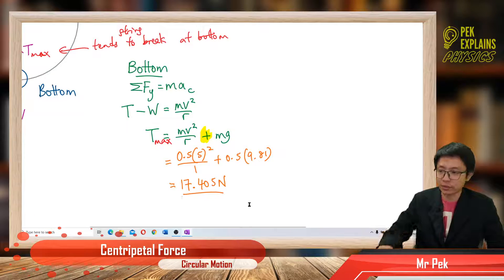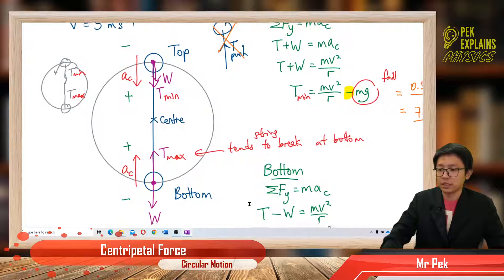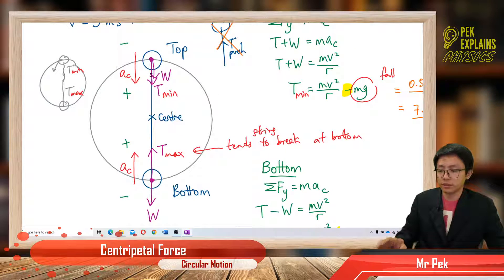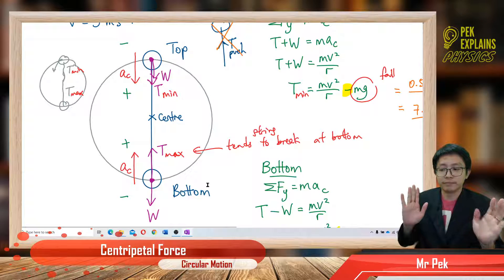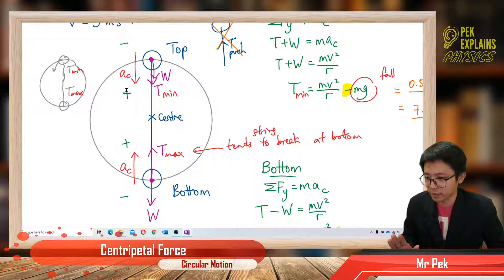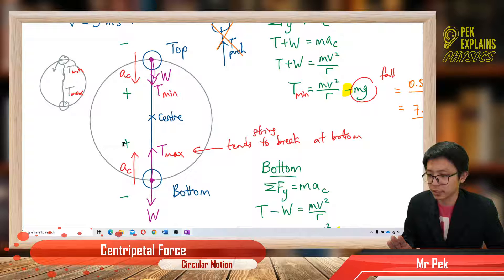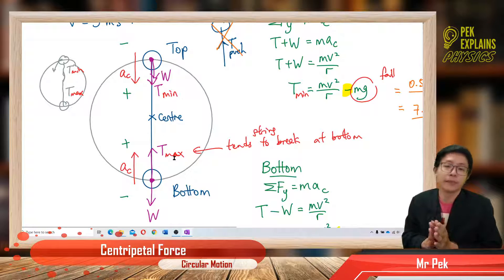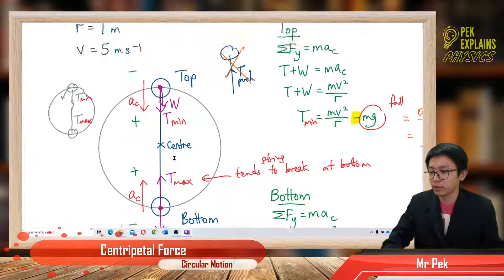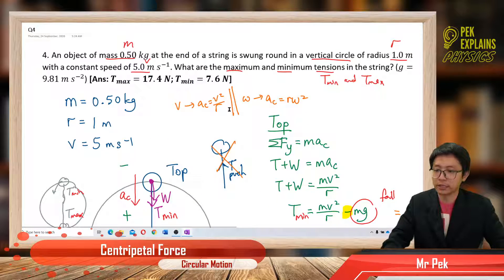That's how you do questions for vertical circular motion. You must know how to draw the free body diagram. Remember: the force following the acceleration direction is always positive. At the top, acceleration goes down so downward is positive. At the bottom, acceleration goes up so upward is positive. Hope you enjoy — let's continue with question 5 later on. Bye!